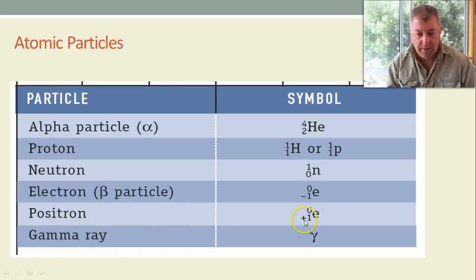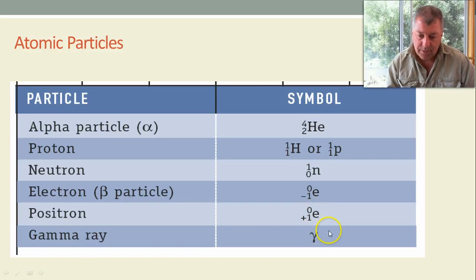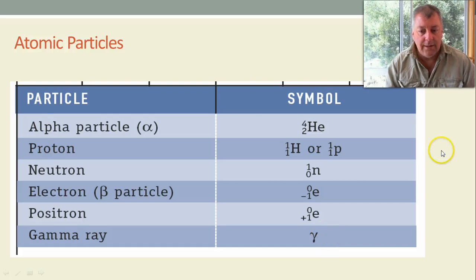A positron, which we'll talk about, we'll mention, this is the antimatter equivalent of an electron. And a gamma ray is a sort of funny little thing, like a fish standing on its tail. And they're the symbols that you'll see from now on, used quite a lot.